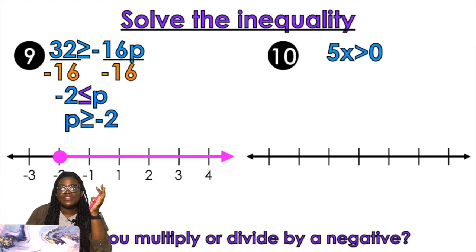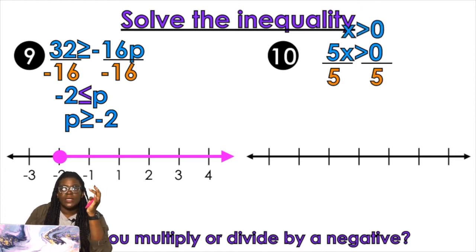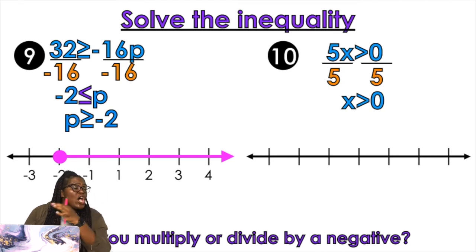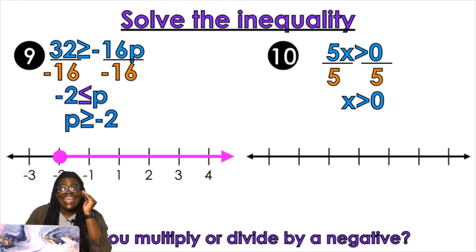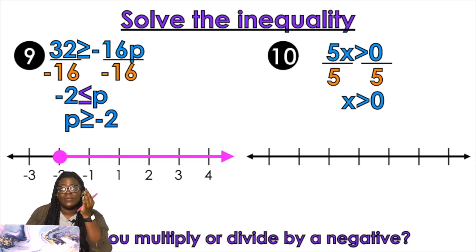5x is greater than zero. Divide by 5, divide by 5. Did you multiply or divide by a negative? No, you didn't. So do you have to flip the symbol? No, you don't — only when you multiply or divide by a negative. Open circle or closed circle? Open circle. Left or right? Right.